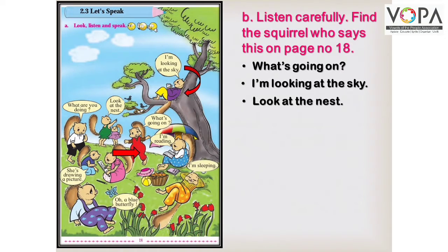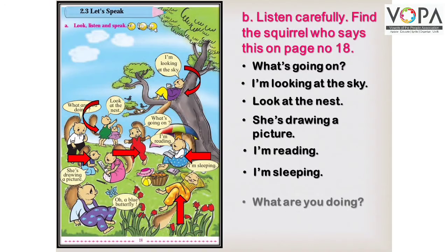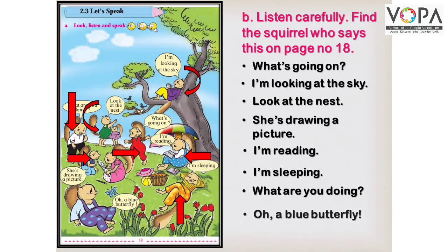'Look at the nest' — यह किसने कहा? इसने। 'She is drawing a picture' — यह blue T-shirt वाले squirrel ने कहा है। 'I am reading' — देखो यह squirrel छतरी के नीचे पढ़ रही है, यह उसने कहा है। 'I am sleeping' — देखो यह orange shirt में यह squirrel सो रही है। 'What are you doing?' — यह white shirt वाले squirrel ने कहा है। 'Oh, a blue butterfly!' — यह sentence इस squirrel ने कहा है। इस तरह बच्चों, आपको sentence को गौर से सुनना है और उस squirrel को निशान लगाना है।